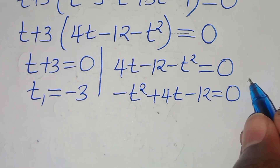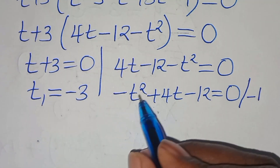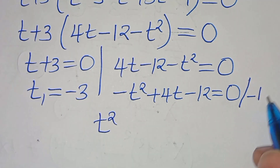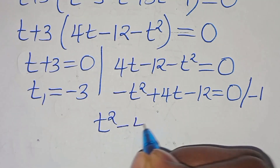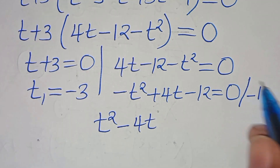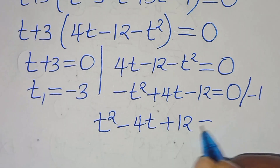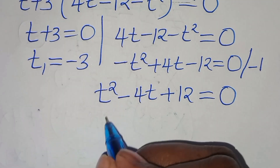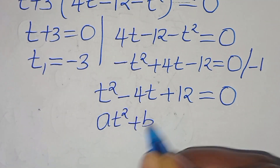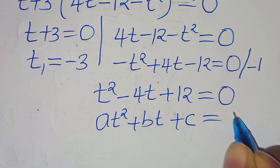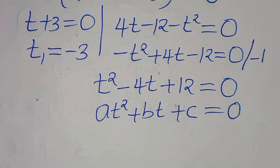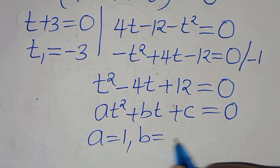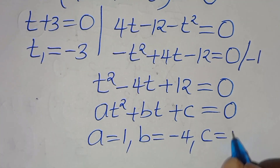Let's divide both sides by minus 1, so minus t squared divided by minus 1 becomes t squared, plus 4t divided by minus 1 is minus 4t, then minus 12 divided by minus 1 is plus 12, this is equal to 0. So this is a quadratic equation of the form a t squared plus b t plus c equals 0, where a equals 1, b equals minus 4, and c equals 12.